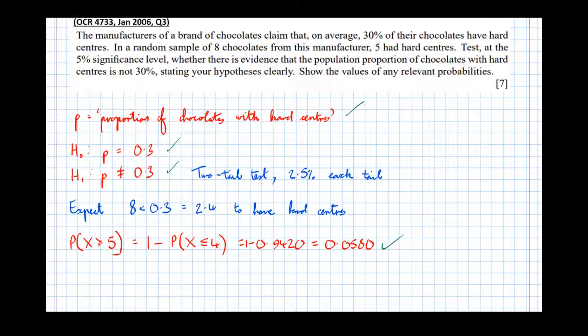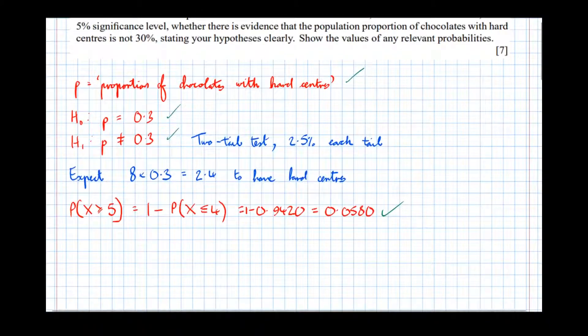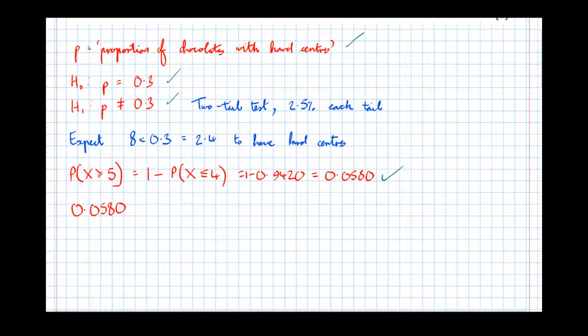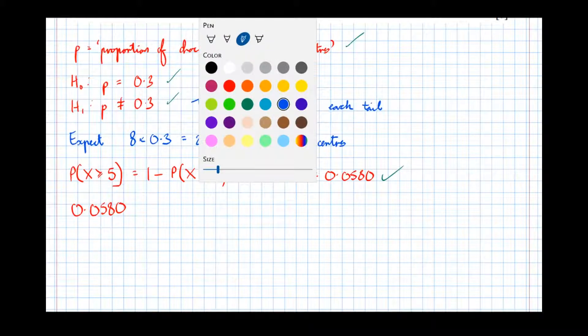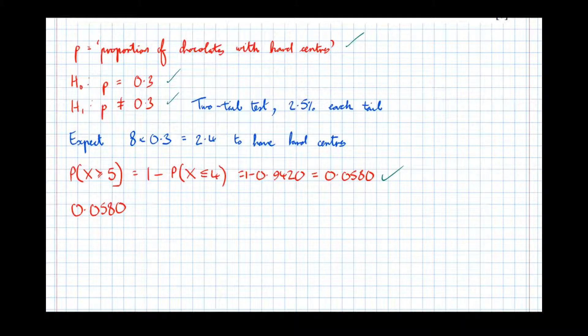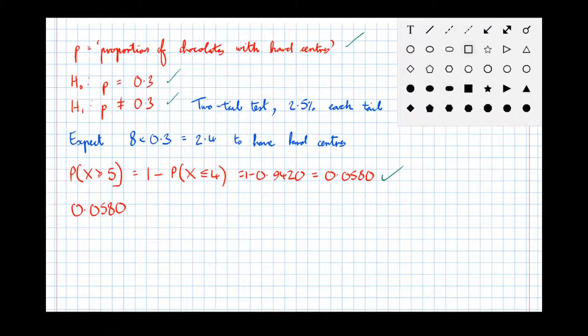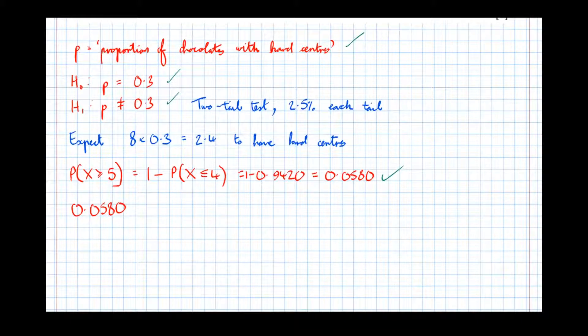And that's worth a mark, so four marks so far. Next mark: compare at the significance level. So 0.0580. And just a little diagram here to help explain the logic behind this. But again, let's think of the probability line on a sliding scale.